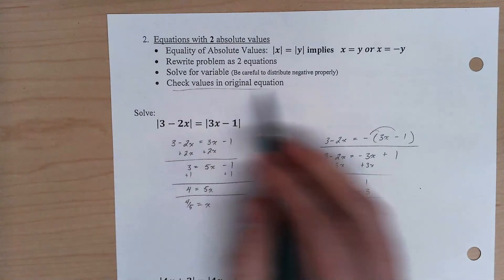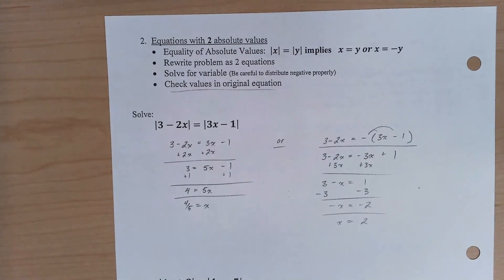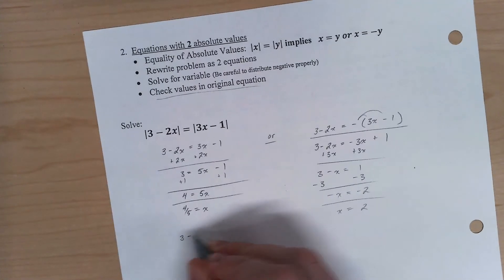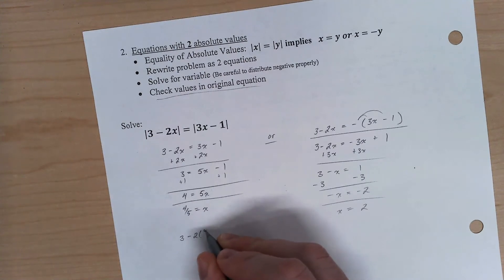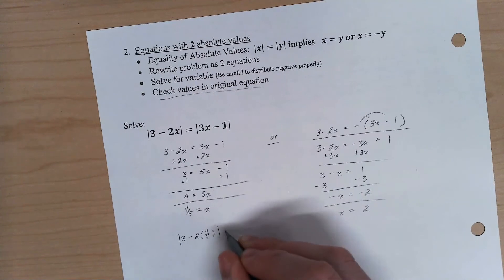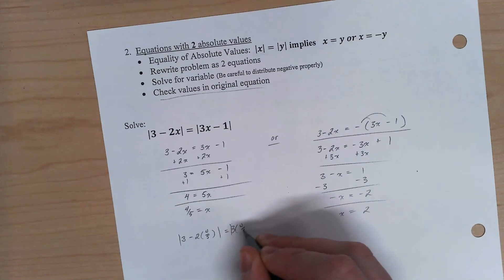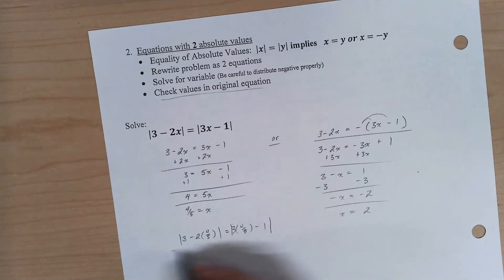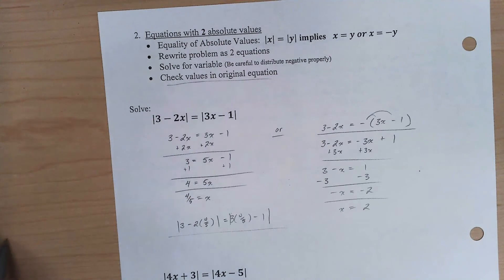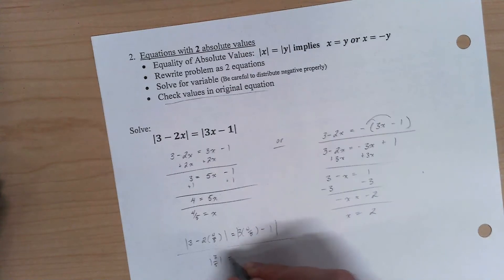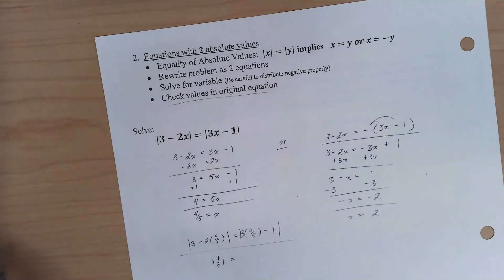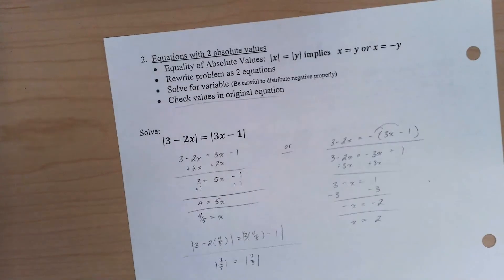All right. Our last bit is to check these values. I need to make sure that these do truly work. These do actually give us solutions. 3 minus 2 times 4 over 5, is the absolute value of that equal to the absolute value of 3 times 4 over 5 minus 1. Well, no need to fuss over this when we have calculators to give us a hand. It's the absolute value of 7 over 5. And this is also the absolute value of 7 over 5. So we know 4 fifths is good to go.